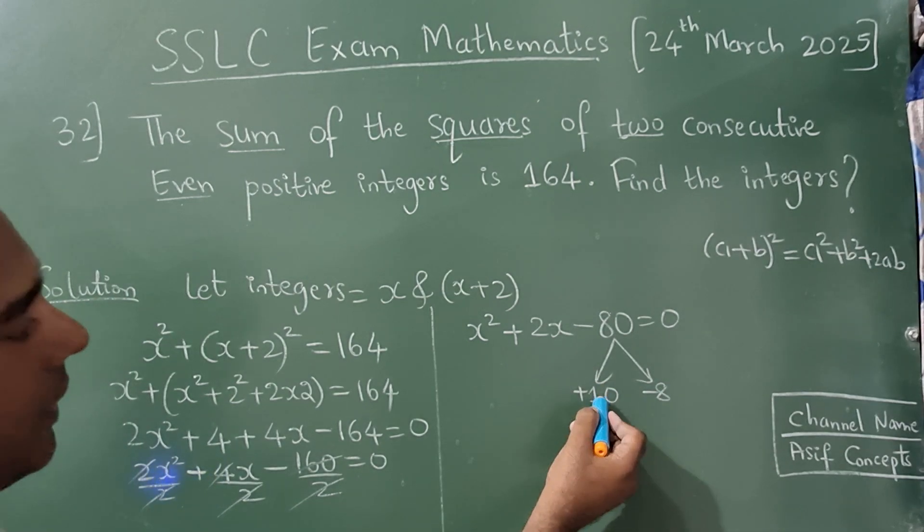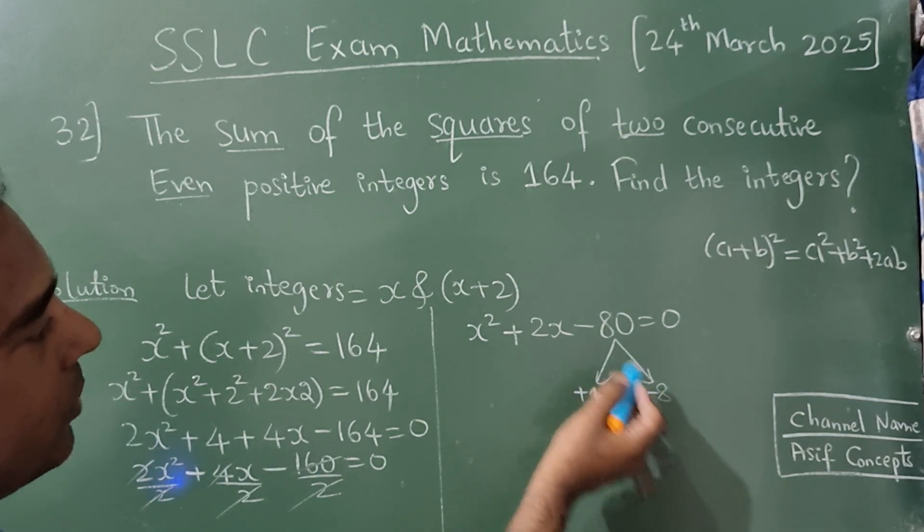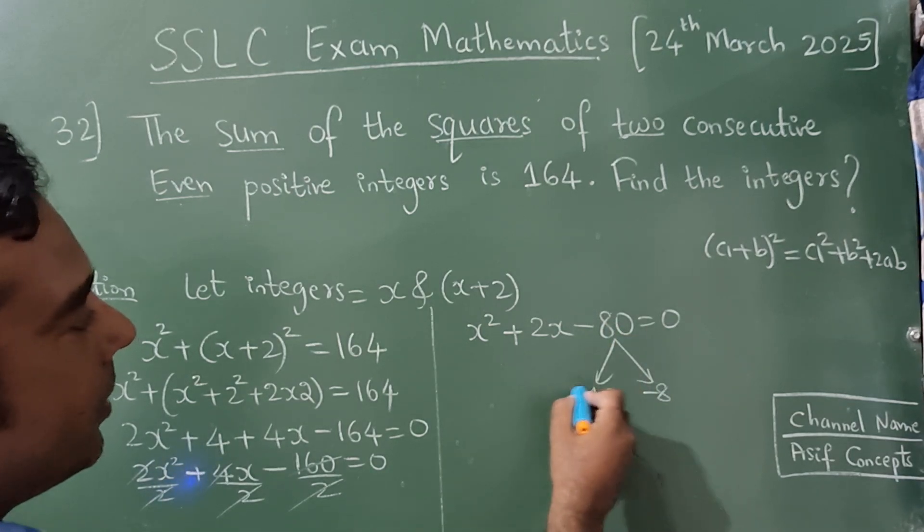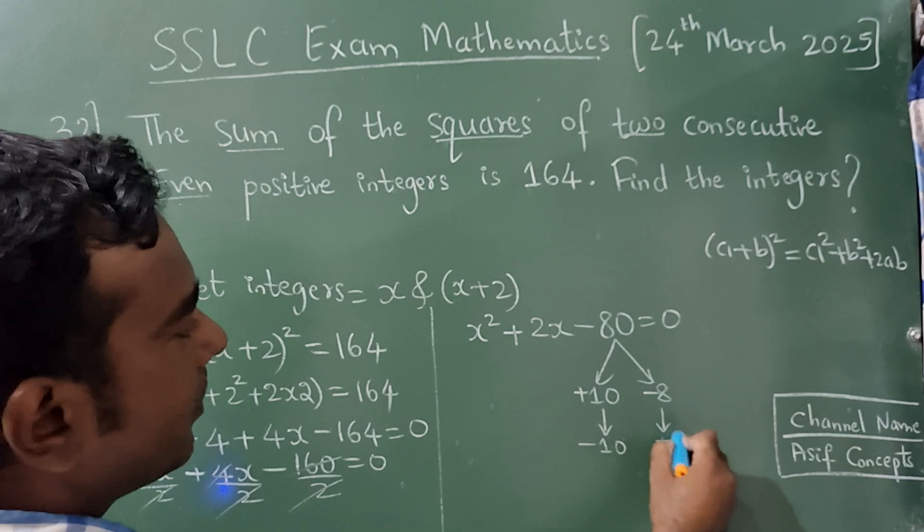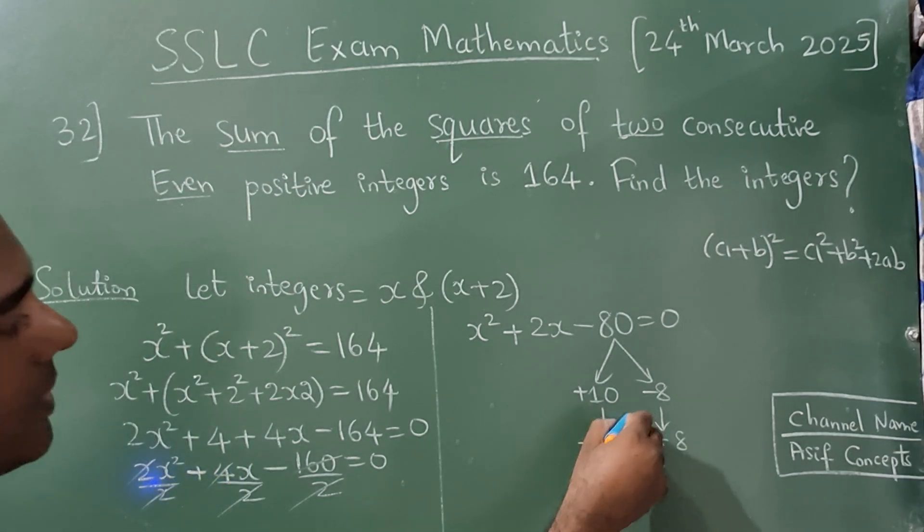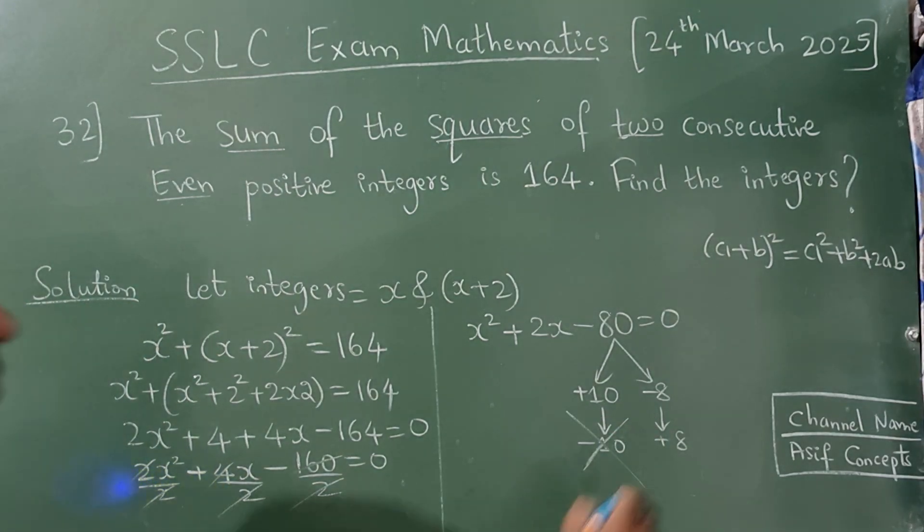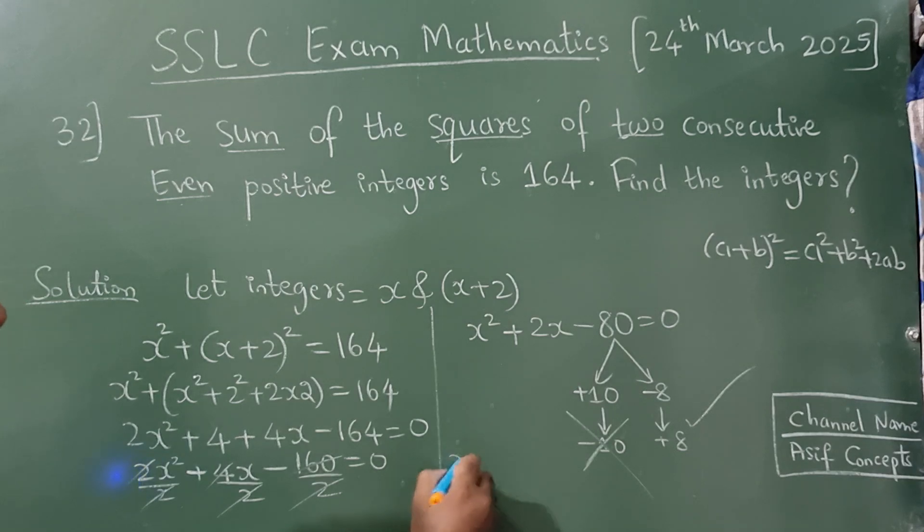Here it should be plus, here it should be minus. 10 minus 8 is 2, plus into minus is minus, 10 8 is 80. Again, plus will become minus, minus will become plus, so minus cannot be the answer.